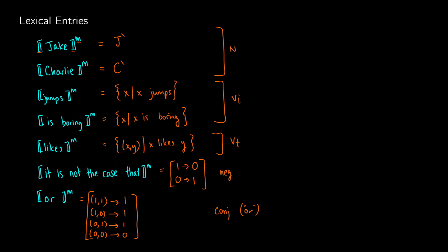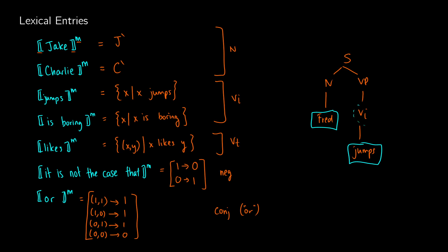Now that we have our base lexical entries, we need to figure out how to compose them. For example, if we have a simple tree with S, VP, and VI — imagine the word 'jumps' and the word 'Fred' — at this point we only know the lexical entries for those terminal nodes. So how are we going to get the meanings for VI, VP, N, and S? That's what we'll discuss next.